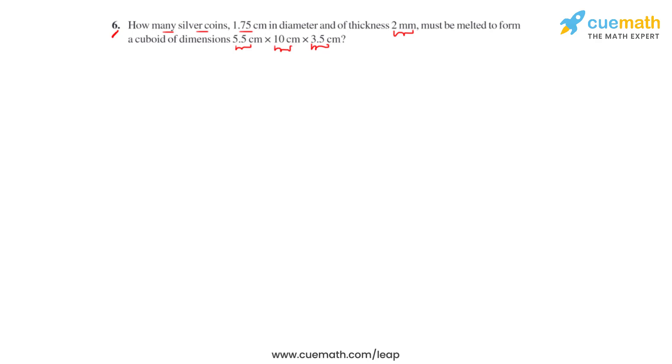Let's have a visual representation of the question first. We have a coin in the shape of a cylinder with a height of 2 millimeters as its thickness and a diameter of 1.75 centimeters. So the radius of the cylinder r1 will be equal to 1.75 divided by 2, which is 0.875 centimeters.